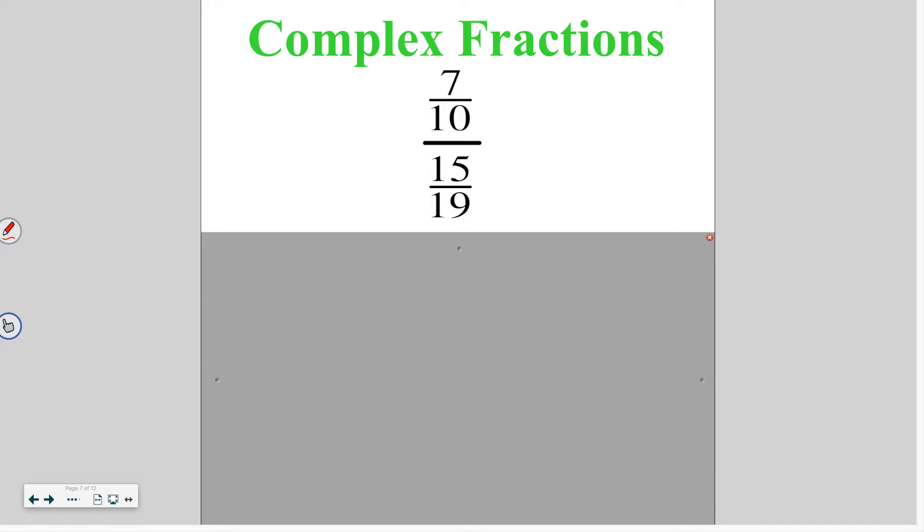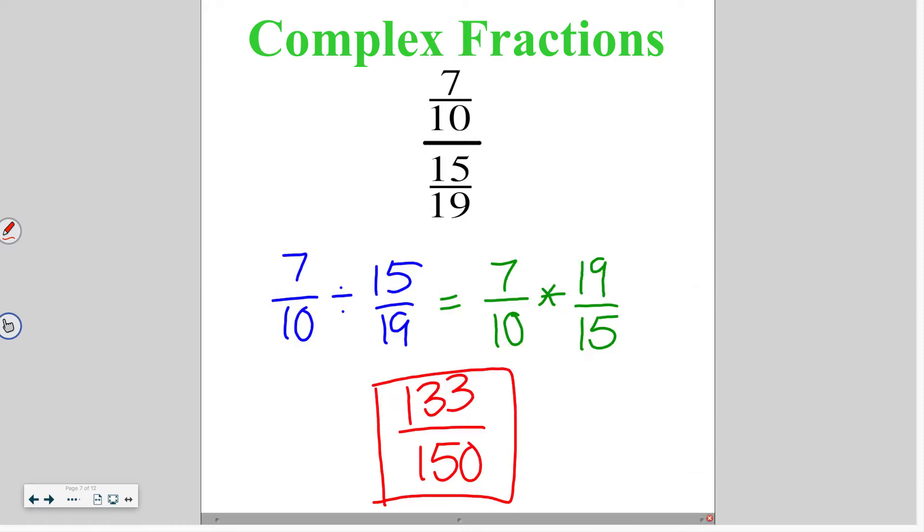Go ahead and try this one on your own. So we had 7 tenths divided by 15 ninths. Flip that to 7 tenths times 19 fifths. That gives you 133 over 150 and that cannot be reduced.